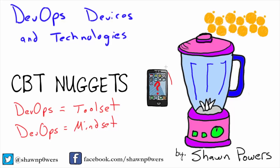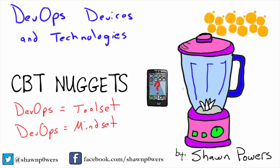You know that guy on YouTube who takes really expensive devices and puts them in a blender and says, 'Will it blend?' and chops them up into tiny pieces. DevOps can be a little bit like that.